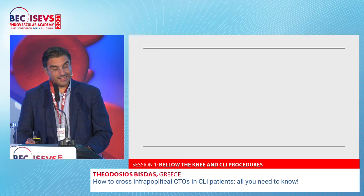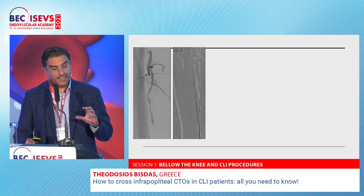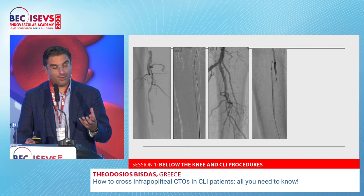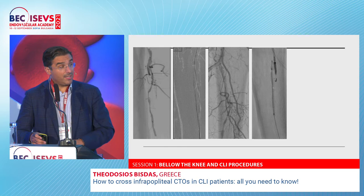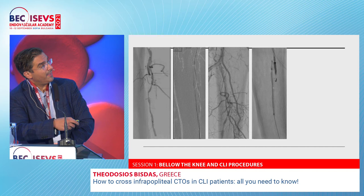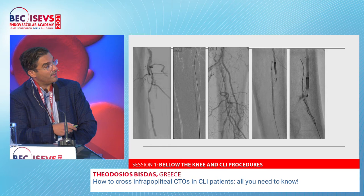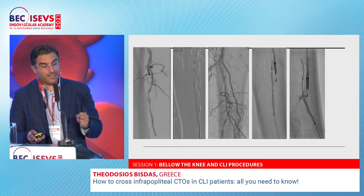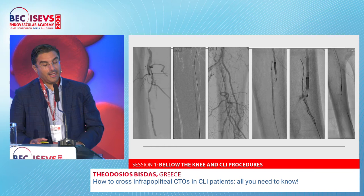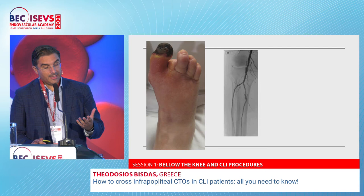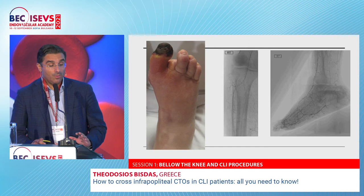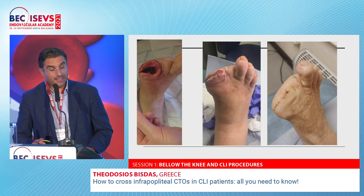Here is use of the Outback re-entry system in a very challenging case. Going from below, we were unable to penetrate the distal cap of the occlusion. The re-entry catheter has an 'L' marker indicating where the needle exits. The wire enters the balloon from above, the balloon catches the wire, and then we deflate and withdraw — creating the connection. Afterwards we performed aggressive angioplasty with a very nice result and complete healing of the foot.